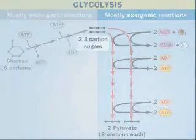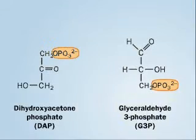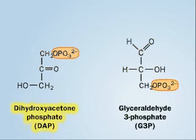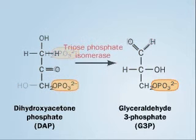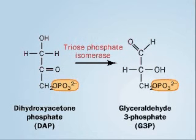The three-carbon sugars which begin these reactions are glyceraldehyde-3-phosphate, G3P, and dihydroxyacetone phosphate, DAP. The molecule of G3P is ready as is for the reactions that follow, but DAP must first be converted to its isomer, G3P, by triosephosphate isomerase.